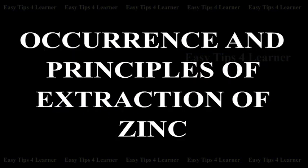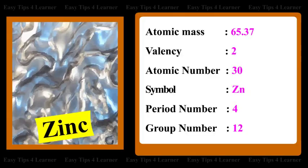Occurrence and Principles of Extraction of Zinc. Atomic mass 65.37, valence 2, atomic number 30, symbol Zn. Position in the periodic table: period number 4, group number 12.